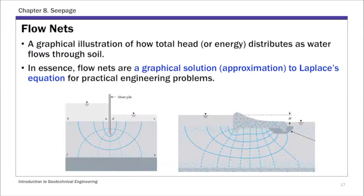Flow nets basically is a graphic illustration of how total head, or total energy, distributes as water flows through soil. So flow nets, in essence, is a graphic solution to Laplace equation for practical engineering problems.